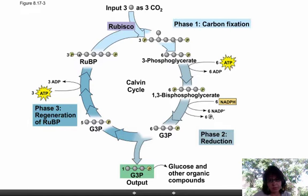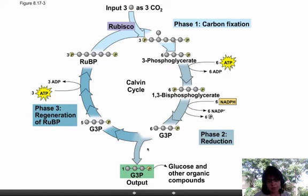Important things to remember: Calvin cycle is where we take CO2, fix it into the system with the enzyme Rubisco, use ATP and NADPH energy to make G3P or glyceraldehyde 3-phosphate, which is a precursor to glucose. That's how we get our food.